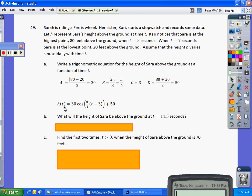So our equation, H of T equals 30 cosine π over 4 times T minus 3 plus 50. That's the equation.